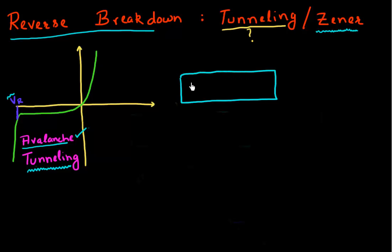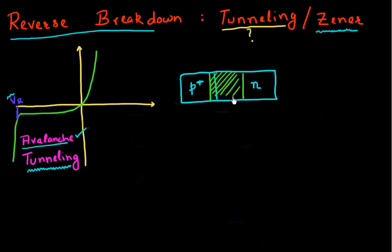I'll further assume that my p side is heavily doped — so I have a p-plus — and my n side is not so heavily doped. So I have a p-plus n junction. In this case, most of the depletion width or most of the depletion region would lie in my n-type region. I'm indicating the boundaries of this depletion region by this green region, so this is essentially where my depletion region is. Now let me draw the band diagram.